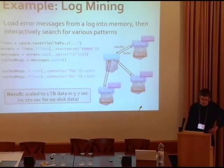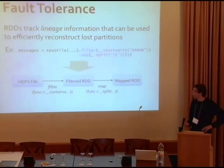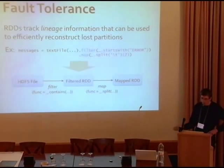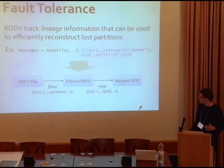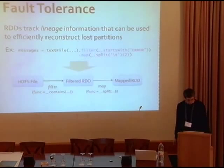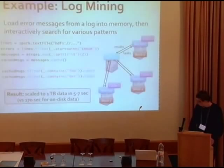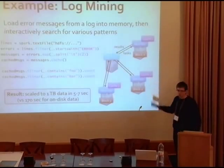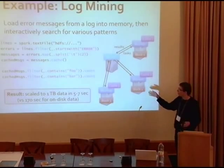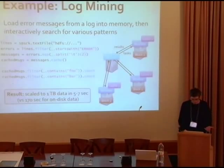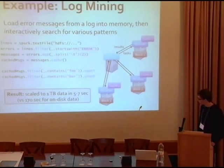The lineage approach works by building graphs of how to derive output RDDs. When you do transformations like filter and map, Spark builds this lineage graph. If it loses a partition — say a block on one machine — it knows to find that block's source, apply the map and filter, and rebuild it. You can recover much faster than restarting the whole job.